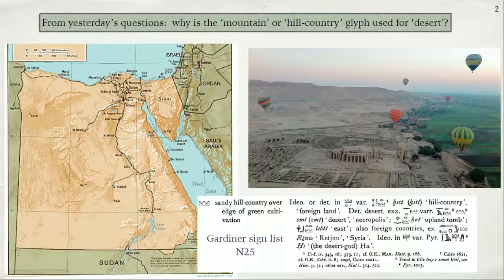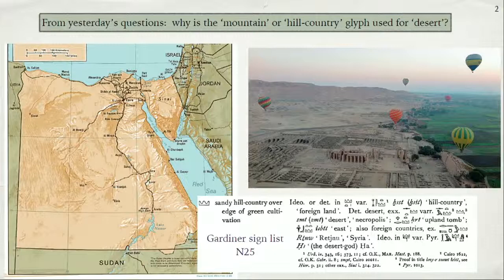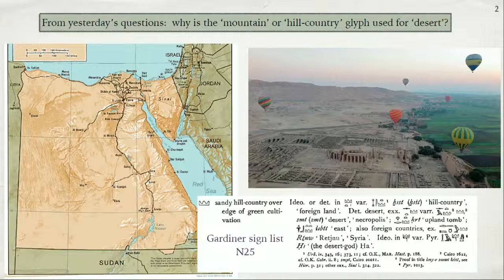You have the Nile Valley at the center, and then pretty quickly you get into a highly elevated area. It's not super high — it's not like Table Mountain — but it gets there. This is an area in Upper Egypt around Luxor. Those of you who have been to Egypt have no doubt seen this vista with the balloons, but now you can see why hill country is associated with desert — it's very stark why those would be one and the same from the perspective of the Egyptians. This is a reminder about the importance of thinking about geography when studying foreign places and their languages.